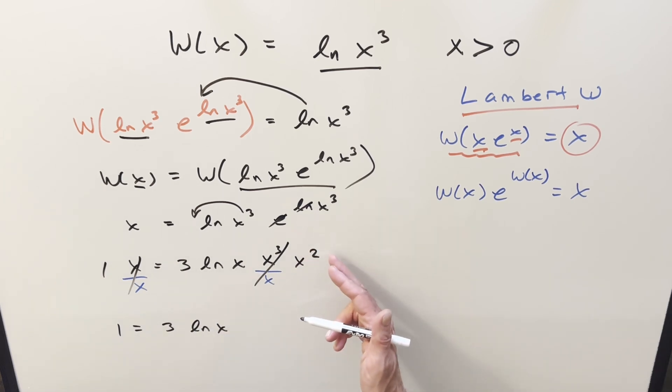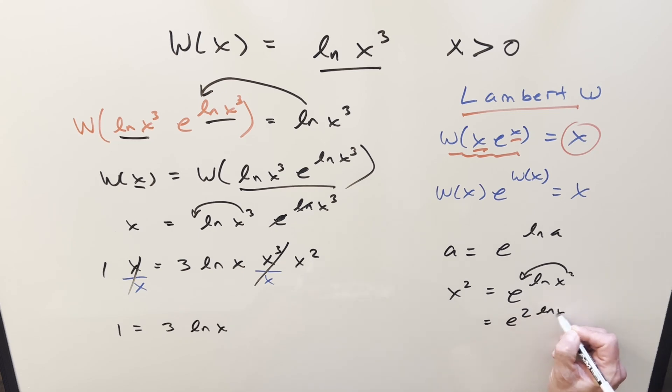So we'll clean it up. We'll have 1 equal to 3 ln x. For x squared, I actually want to kind of reverse what we did because we have this property that if we have a, we can write it as e ln a. So for x squared, I want to just do that. I want to write x squared as e ln x squared. And then what we'll do is use log properties again here, and we'll write it as e 2 ln x.